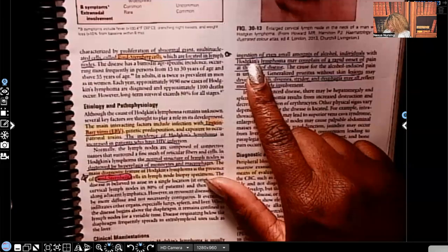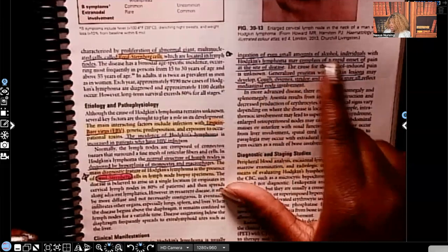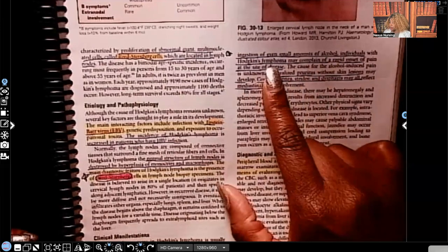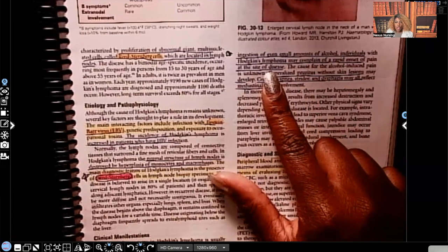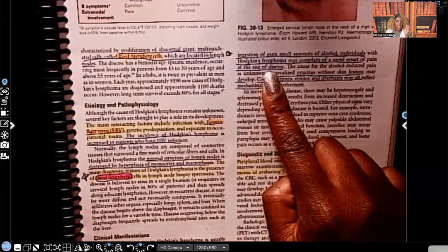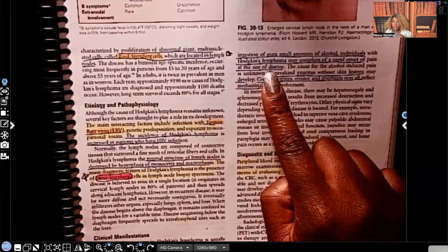After the ingestion of even small amounts of alcohol, individuals with Hodgkin's lymphoma may complain of a rapid onset of pain at the site of the disease. So just drinking a little bit of wine, a little bit of beer, a little bit of alcohol, immediately after ingestion of that alcohol, they'll have pain wherever that disease is.